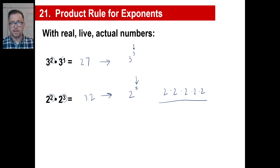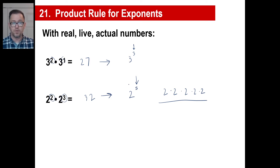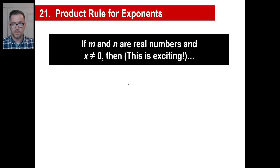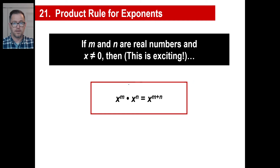We're not going to just use this with 3s and 2s and 4s and 8s — we're going to use it with xs and ys and all that. But it's a piece of cake. This isn't complicated; this is just addition. Can you add two numbers like 2 and 3? Then we're done. So here is the official rule: if m and n are real numbers and x is not equal to zero, then x to the m power times x to the n power is x to the m plus n power.